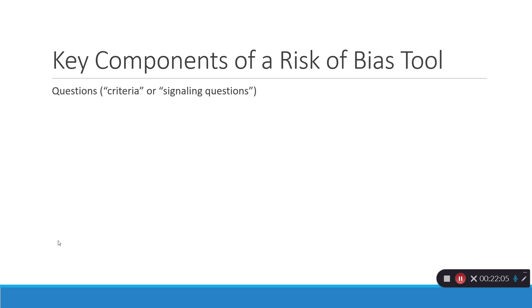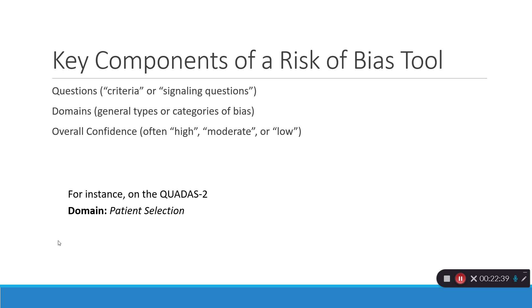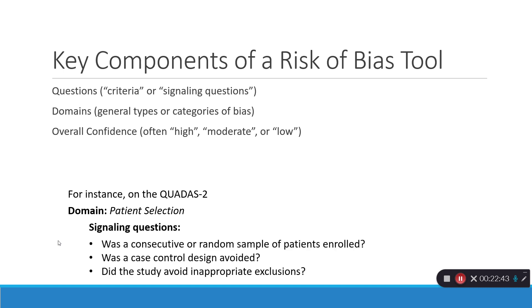Now, key components of a risk of bias tool. Again, this is kind of a review. We have the questions, which are sometimes called criteria or signaling questions. We have the domains, which are general types or categories of bias. And then we have our overall confidence. Often I see studies will characterize it as high risk of bias, moderate or low, or high confidence, moderate or low confidence. So you have those kind of three levels. Let me give an example from the QUADAS-2 domain patient selection. You'll notice that there are three different signaling questions. Was there a consecutive or random sample of patients enrolled? Was a case control design avoided? Did the study avoid inappropriate exclusions? I would answer these three questions, and then that would give me a sense of what do I think overall for this domain about patient selection? Is it going to be a problem or not?